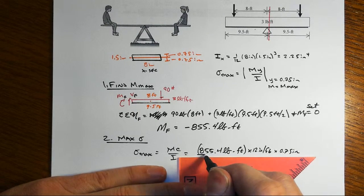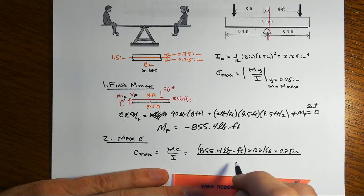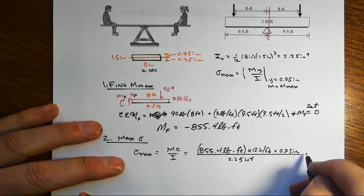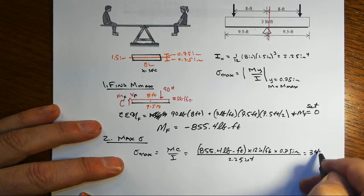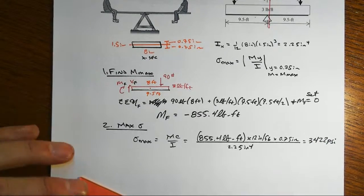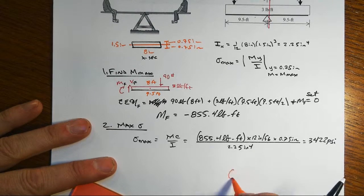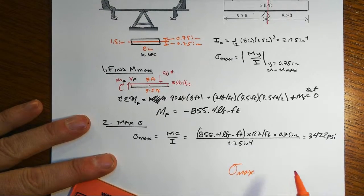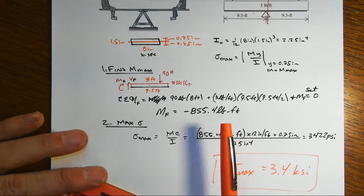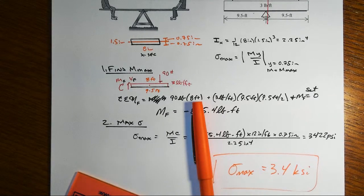that would be tension in this case, and we have a moment of inertia of 2.25 inches to the fourth. And we'll get an answer of 3,422 psi, and that would lead us into a final answer of 3.4 ksi, and that could be plus or minus, depending on how we want to express it. Thank you.